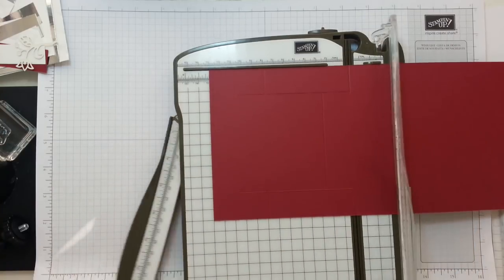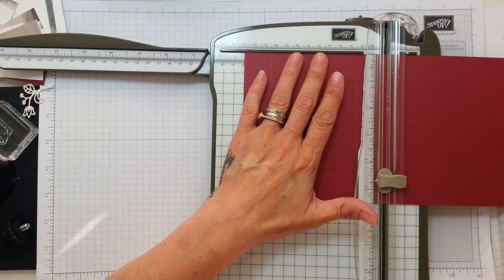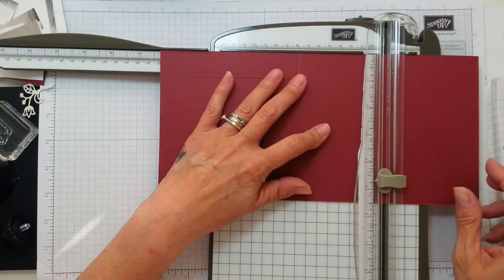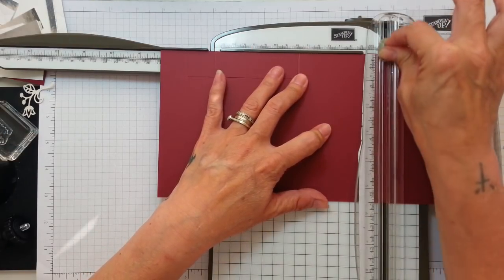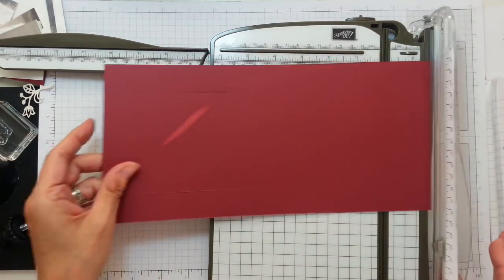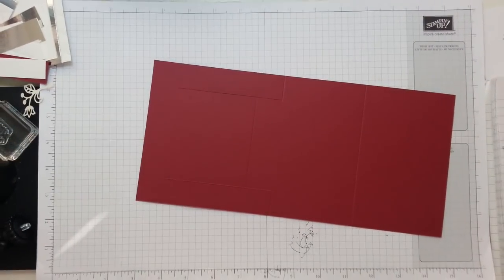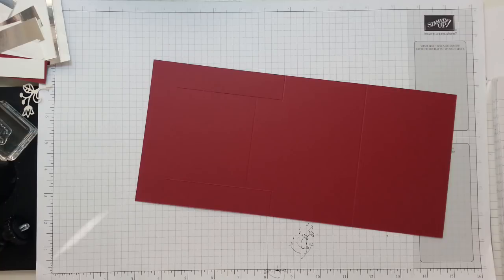And then we're going to take this cross. I was doing mine, the other one on my score board. I'm going to take this to eight and one quarter and score right through. That is it. It's so simple. Perfection.